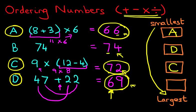That leaves only B with 74. And that is how we order numbers with a mixture of problems. Firstly, solve them. And then secondly, you can begin ordering them.